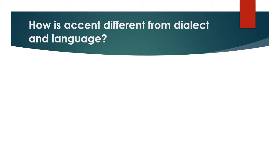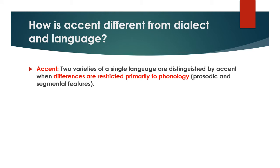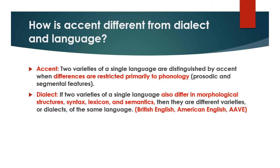When we talk about accent, we focus on how people sound. Two varieties of a single language are distinguished by accent when differences are restricted primarily to phonology — prosodic and segmental features. So African American English, for example, has a different accent than British English. The word 'dialect' is used to mean something more: if two varieties also differ in morphological features, syntax, lexicon, or semantics, then they are different dialects of the same language.